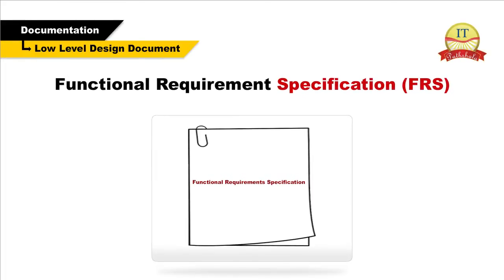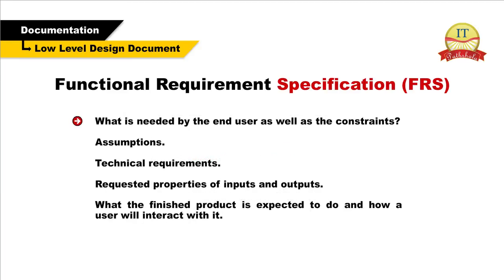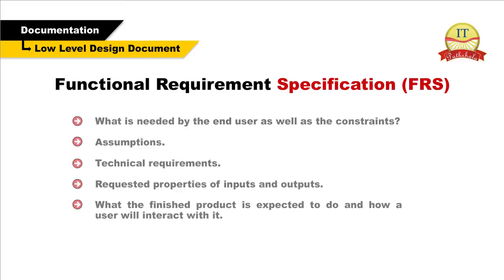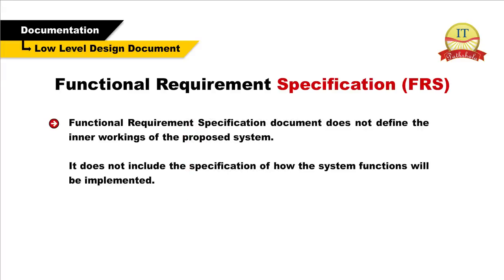Functional Requirements Specification. In software development, Functional Requirements Specification or FRS is a formal document used to describe a product's intended capabilities, appearance, and interaction with users. The document typically outlines what is needed by the end user as well as the constraints, assumptions, technical requirements, and requested properties of inputs and outputs. In a nutshell, it specifies what the finished product is expected to do and how a user will interact with it. FRS is read by business analysts, developers, project managers, and testers. However, an FRS document does not define the inner workings of the proposed system nor how the system functions will be implemented. Instead, it focuses on what various end users might observe when interacting with the system.